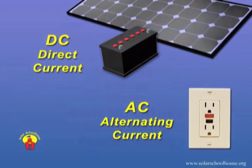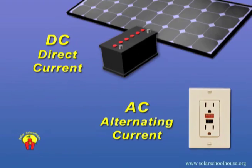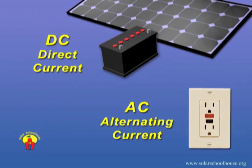We use two different kinds of electricity: DC electricity and AC electricity. Batteries and solar panels supply direct current, or DC electricity. The electricity we get from the electric utility in our homes is called alternating current, or AC electricity.